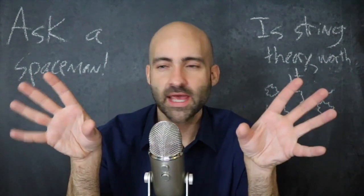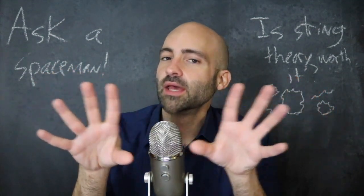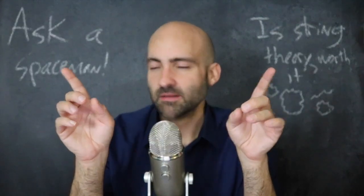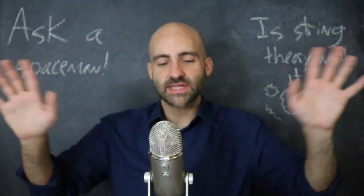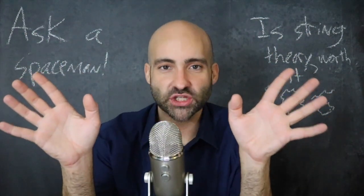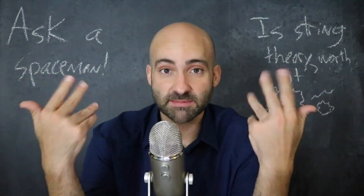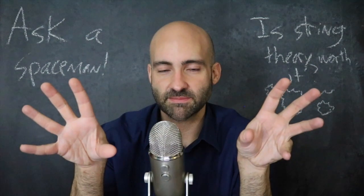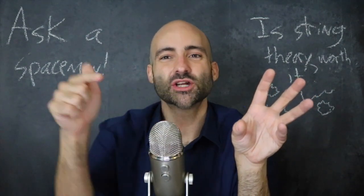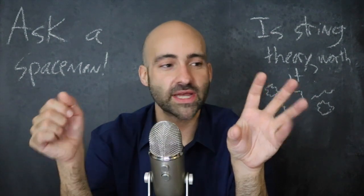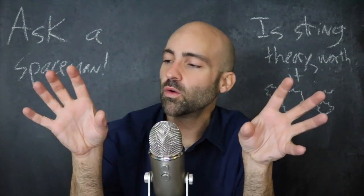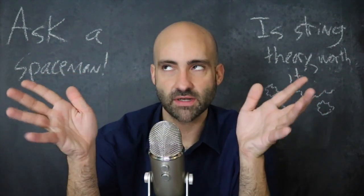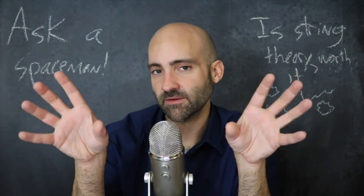They're all related over here, and all the fermions are related over here. What sets them apart is this property of subatomic particles called spin. We don't have to worry about what that actually means for this discussion — we just need to know that there is this property called spin. Different particles have different amounts of spin, and there are two different kinds: either spin that's an integer number — zero, one, two, three — these are the boson family.